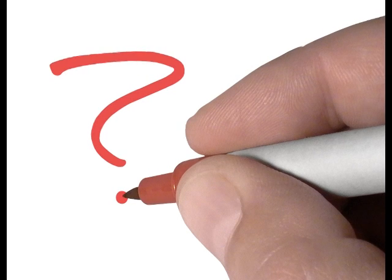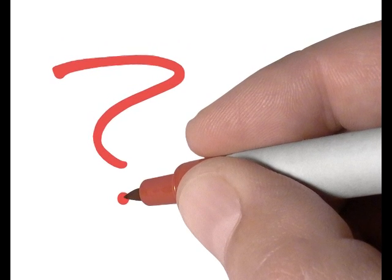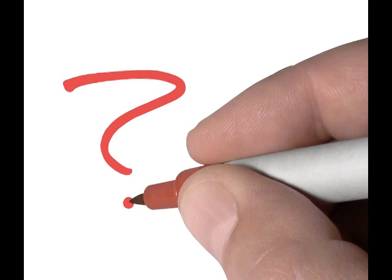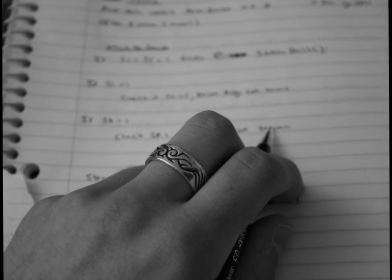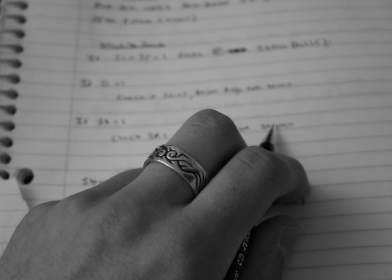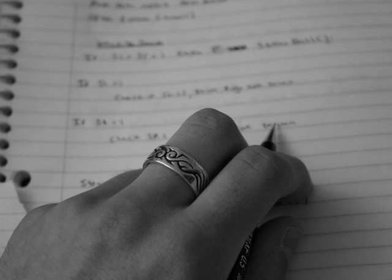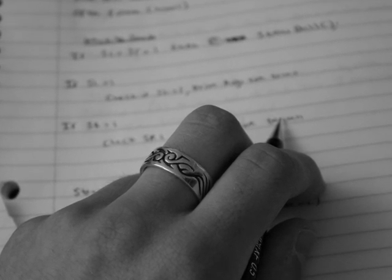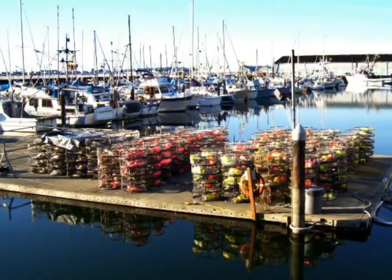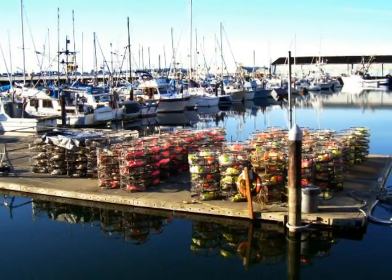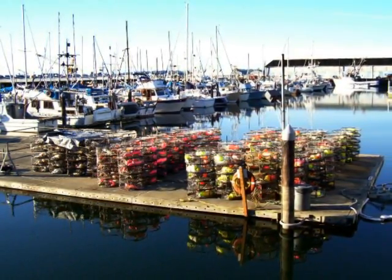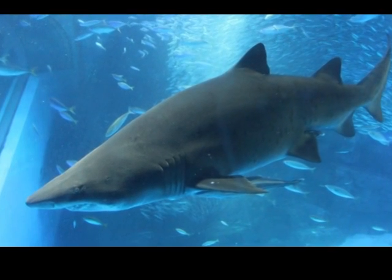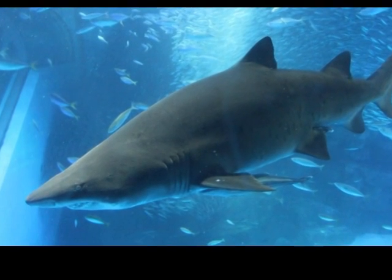Once you've broken down your topic to a narrowed topic, you can then start to think of questions that your research should help you answer, which can then become your thesis. The rest of your paper then becomes a detailed explanation of your position. In our shark example, a possible question could be: how would it affect the fishing industry off the west coast of the United States if we did not protect shark populations?